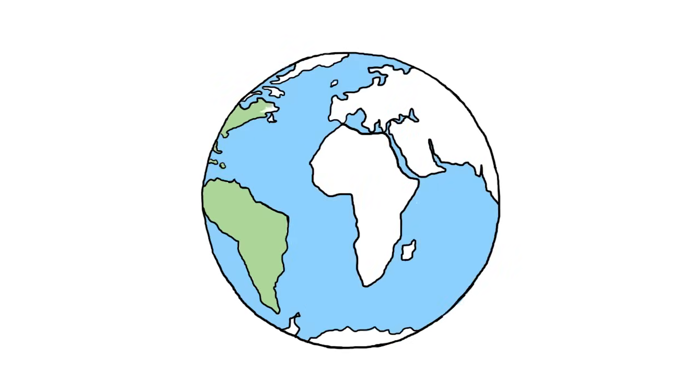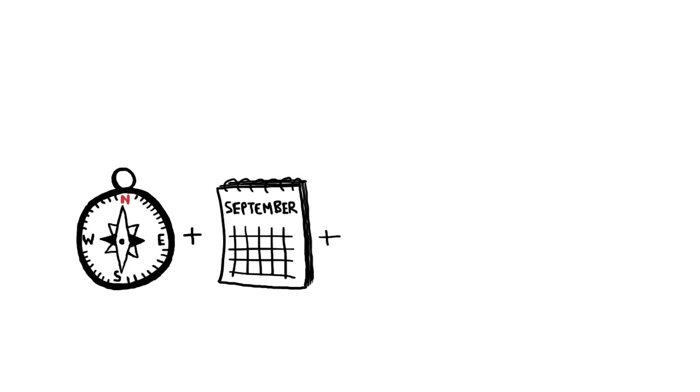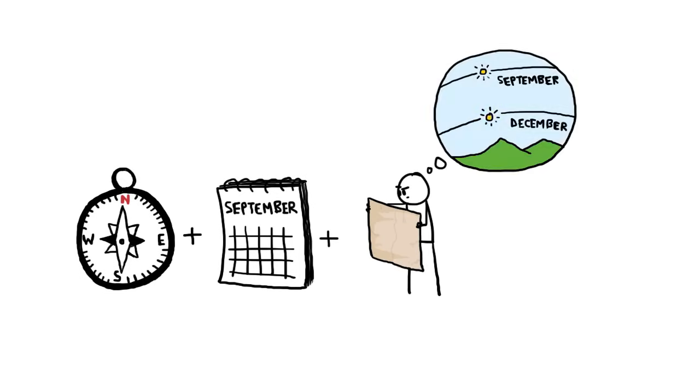To determine a position on Earth's surface, it is necessary and sufficient to know the latitude, longitude, and altitude. Altitude considerations can, of course, be ignored for vessels operating at sea level. If you have a compass, know the date, and have a set of prepared navigation tables showing how high the sun should be at local noon, then you can determine your latitude easily.